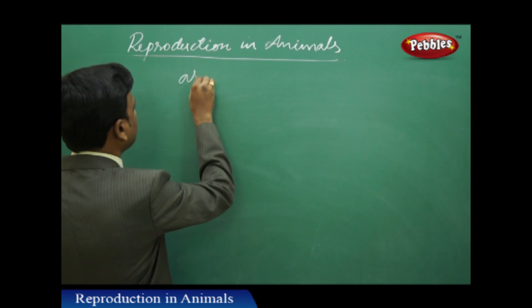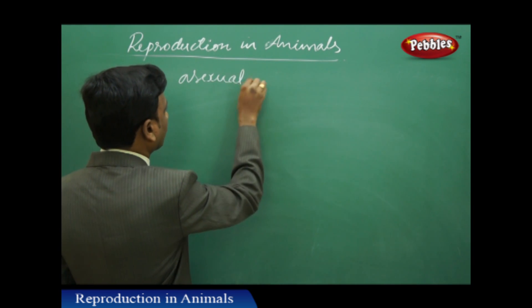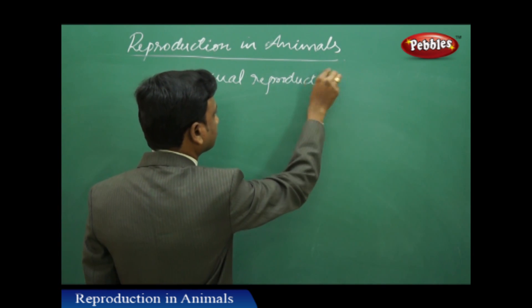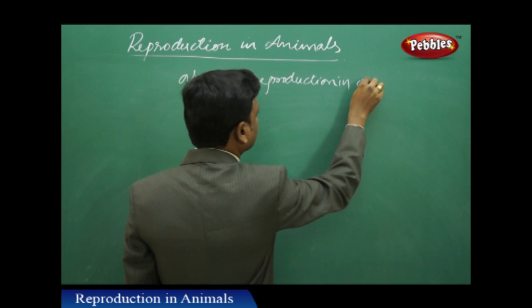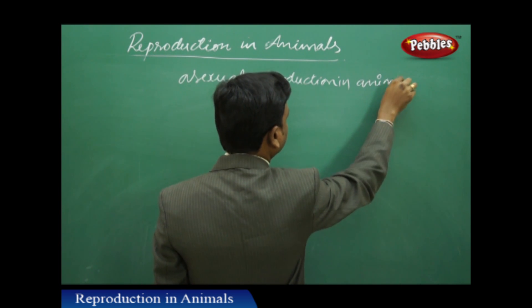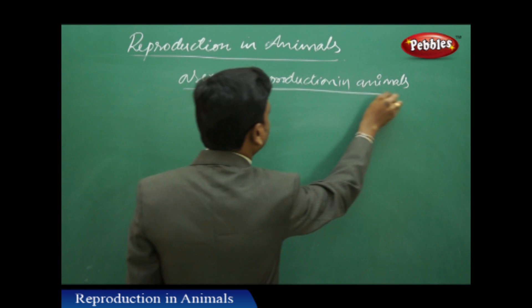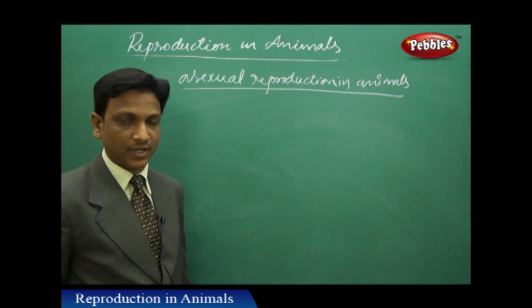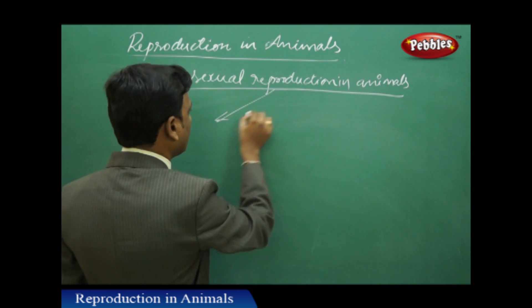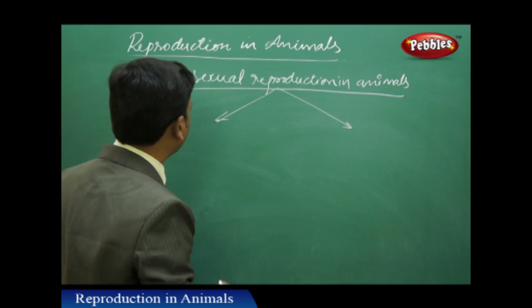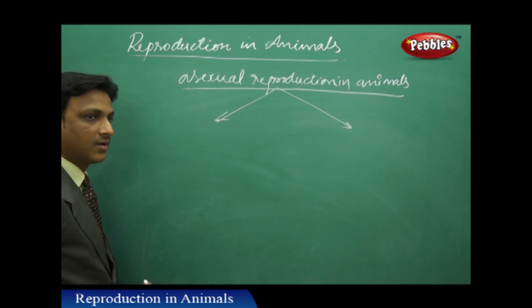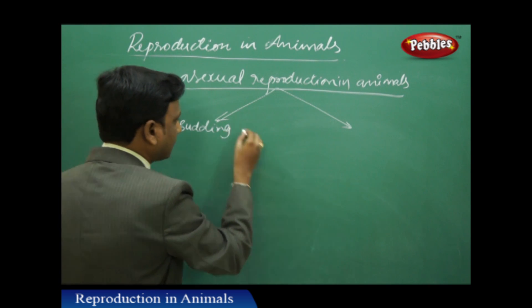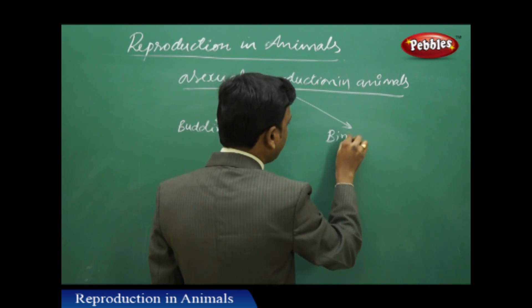Now let us see asexual reproduction in animals. In animals, we see different types of asexual reproduction. Among those, chiefly two methods are observed: one is budding and the other one is binary fission.